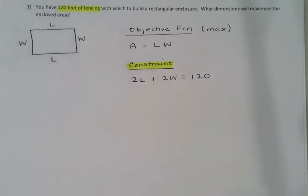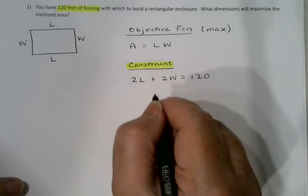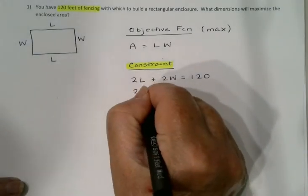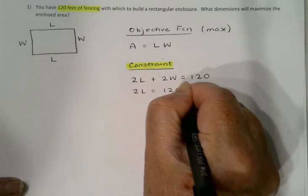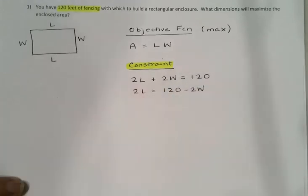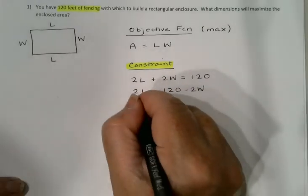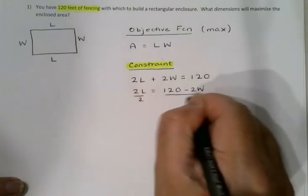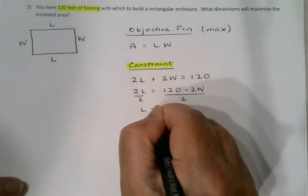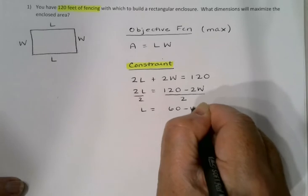I'm now going to take my constraint and solve it for either L or W. It's your choice. Sometimes one or the other will be easier, but in this case they're the same. So let's say 2L = 120 - 2W, and I could divide by 2, so L = 60 - W.